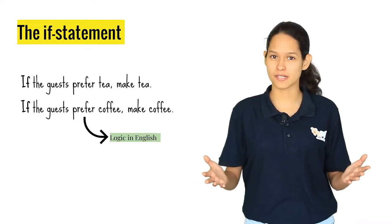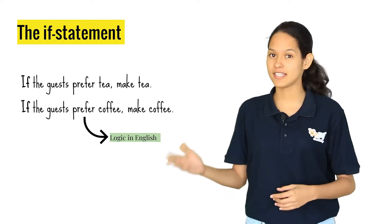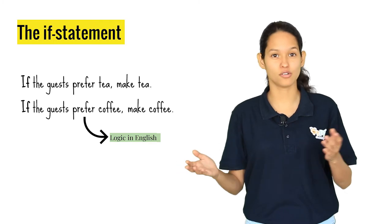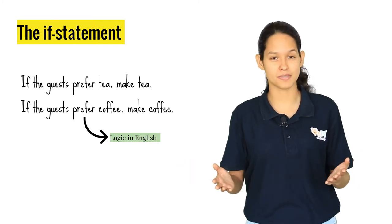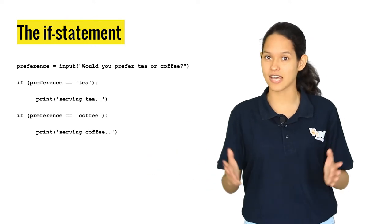What is the if statement? The if statement works by checking a condition. In this example, it checks the preference. If the preference is tea or coffee and prints the statements accordingly. You can try using this block of code and understand the logic.